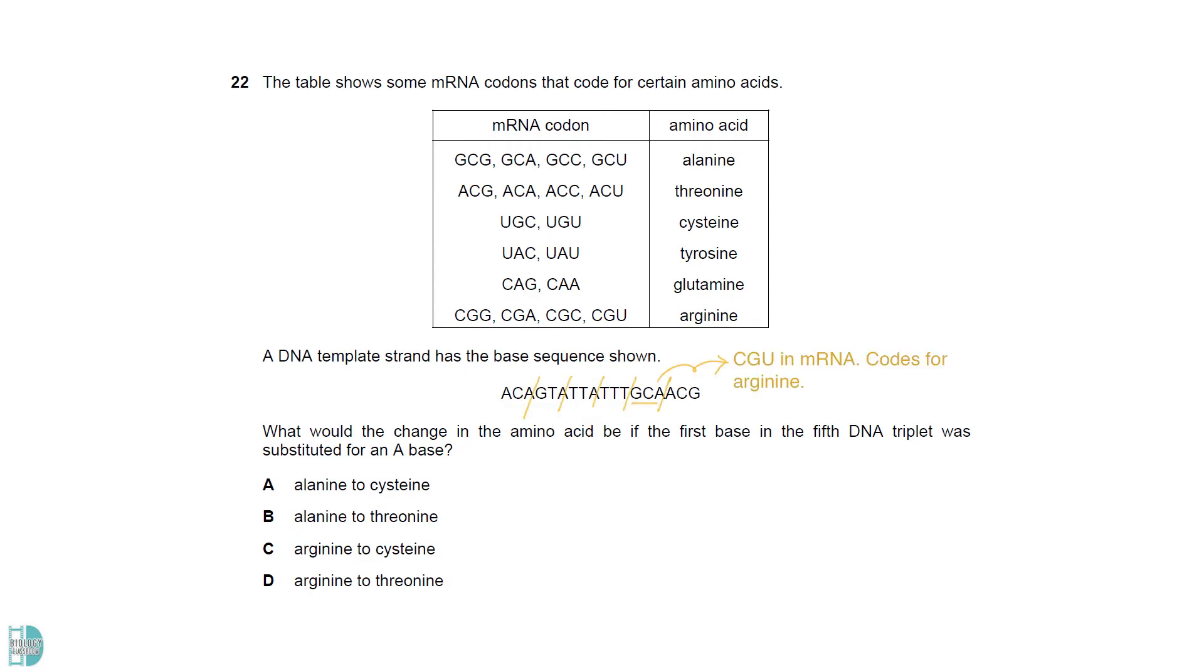The DNA triplet is GCA, so the mRNA would have CGU as the codon. This codon calls for arginine. If the first base in DNA is substituted for an A, it becomes ACA. In mRNA, it will be UGU, which codes for cysteine.